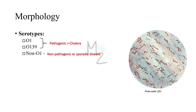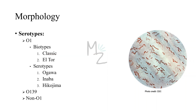Vibrio cholerae is divided into serogroups according to the nature of its O cell wall antigen into O1, O139 and non-O1. O1 and O139 are pathogenic and responsible for causing cholera. Non-O1 is either non-pathogenic or causes only sporadic disease. The O1 organisms have two biotypes — classic and El Tor — and three serotypes: Ogawa, Inaba and Hikojima. Biotypes are based on differences in biochemical reactions, whereas serotypes are based on antigenic differences.